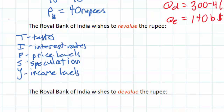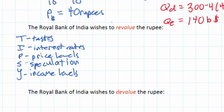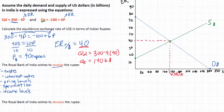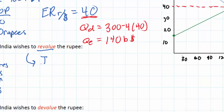I'm going to walk through a specific scenario that could lead to a change in these equations. Let's look at a situation in which the Reserve Bank of India wishes to revalue the rupee — what if the Central Bank of India wanted to strengthen its own currency against the US dollar? One way it could do that is by raising domestic interest rates, so a revaluation would result from an increase in interest rates in India.